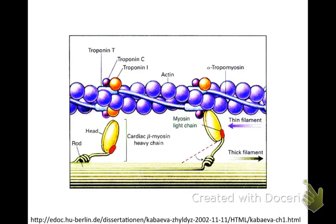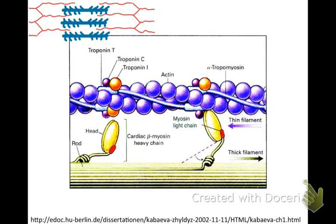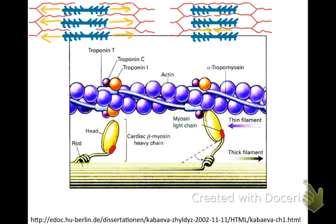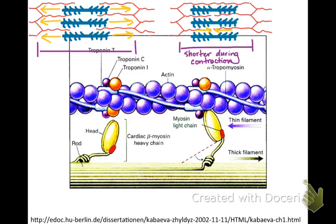Actin fibers plus myosin move our muscles. Muscle fibers are actually composed of many tiny little units called sarcomeres. Here is one sarcomere — in red you can see the actin, and in blue you can see the myosin. With ATP and the presence of calcium ions, those myosins are going to start to walk, pulling the red actin fibers in and creating a contraction. You can see how wide the sarcomere was, and when contracted, how short it is.